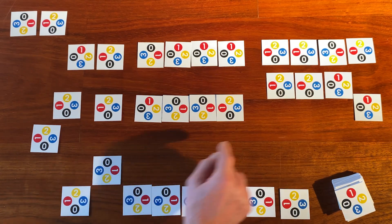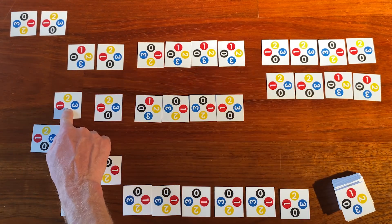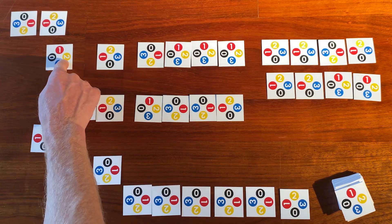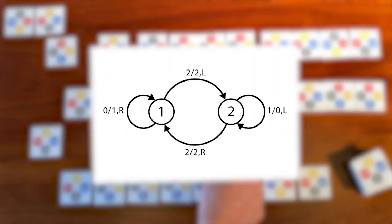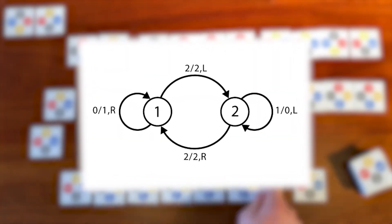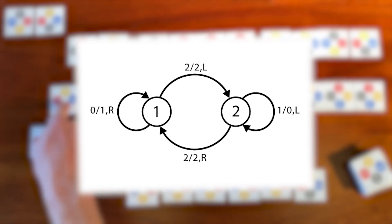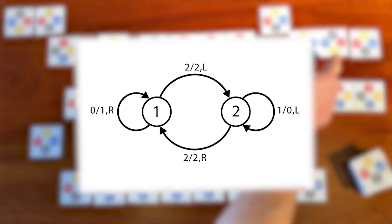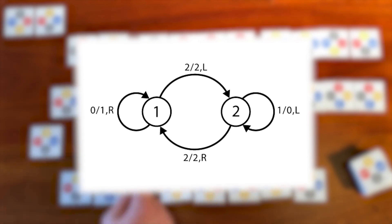We move to the right, and here we are again — back where we started, and I'm in state one. This arrangement of cards and this Turing machine diagram are logically equivalent. My only innovation here was to come up with some fixed rules for laying out the states and the rules from the top of the deck.